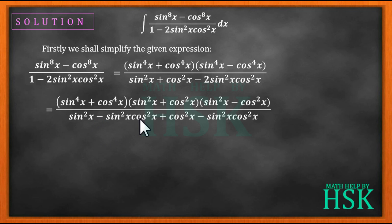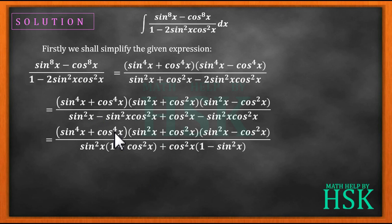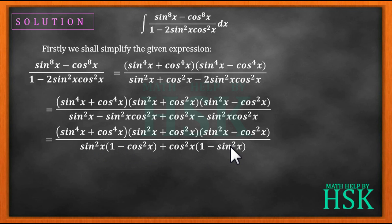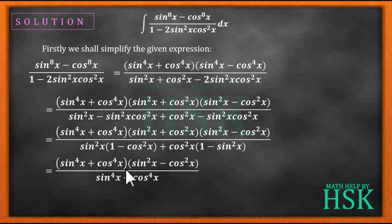Taking sin²x common from some terms and cos²x common from others, the denominator becomes (sin⁴x + cos⁴x)(sin²x + cos²x), which equals sin⁴x + cos⁴x. Using 1 - cos²x = sin²x and 1 - sin²x = cos²x, the (sin⁴x + cos⁴x) factors in the numerator and denominator cancel out.